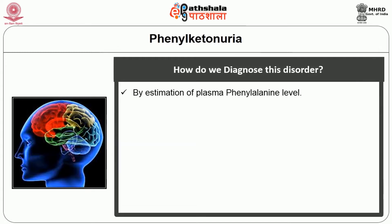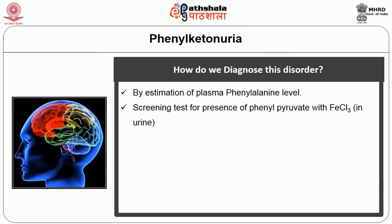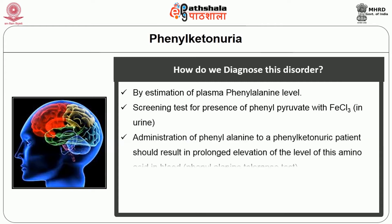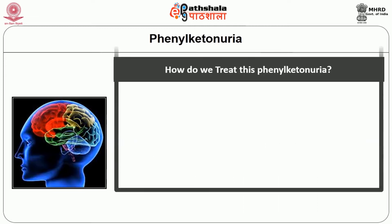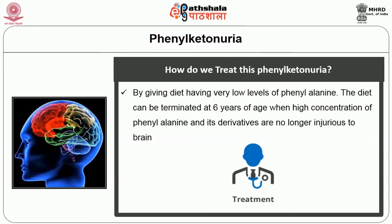Diagnosis of PKU is made by estimation of plasma phenylalanine level, a screening test for phenylpyruvate using ferric chloride, and a phenylalanine tolerance test where administration of phenylalanine to a phenylketonuric patient results in prolonged elevation of this amino acid in blood. Treatment involves giving a diet with very low levels of phenylalanine, which can be terminated at 6 years of age when high concentrations of phenylalanine and its derivatives are no longer injurious to the brain.